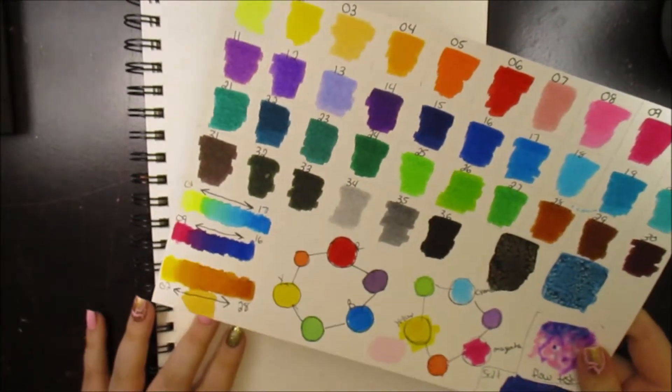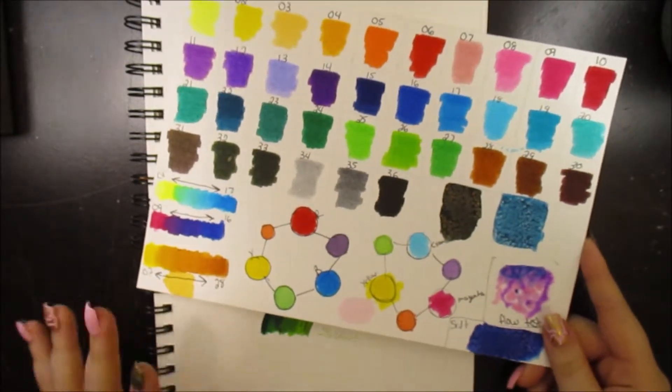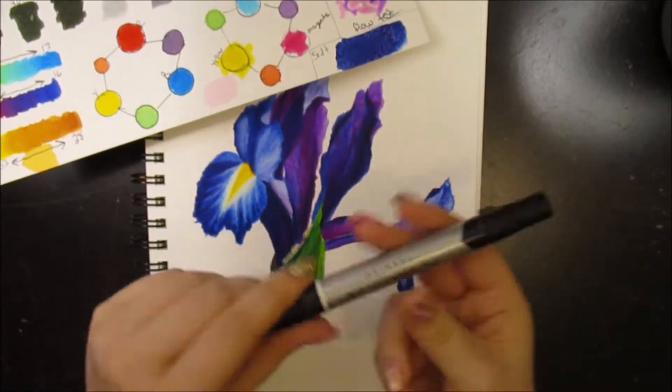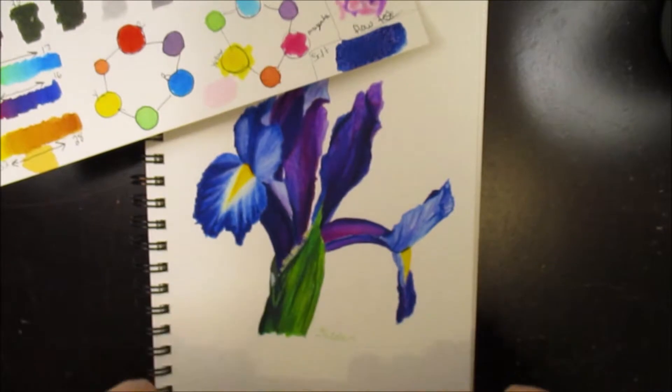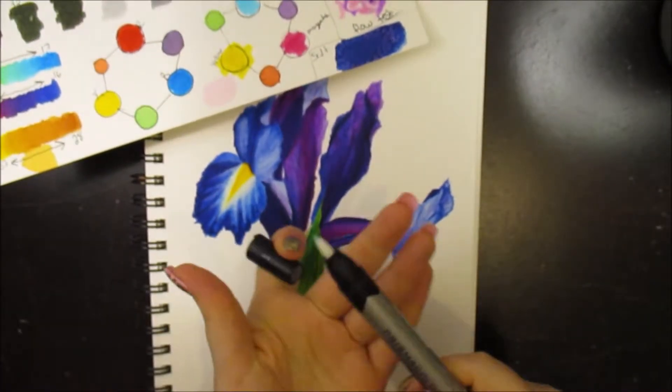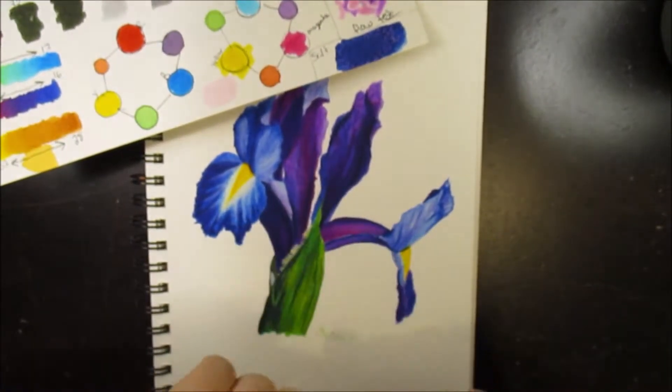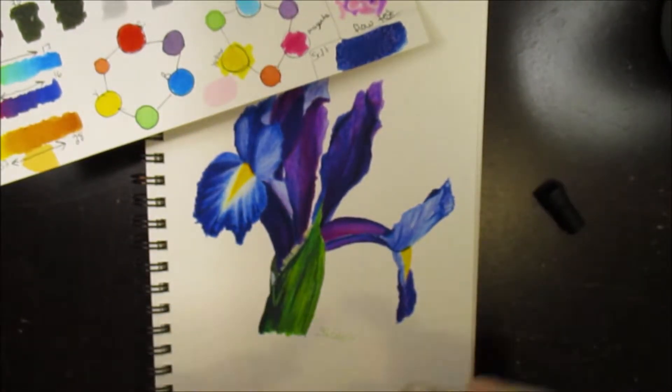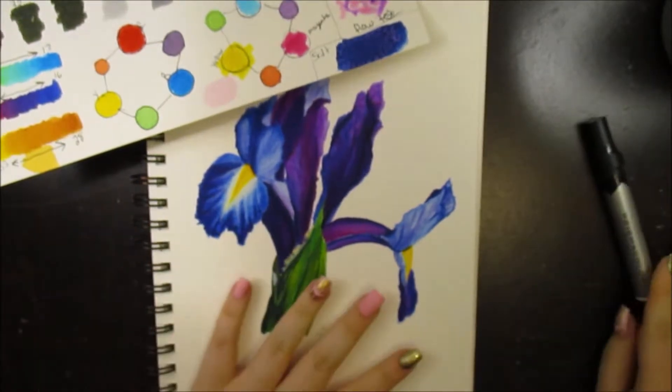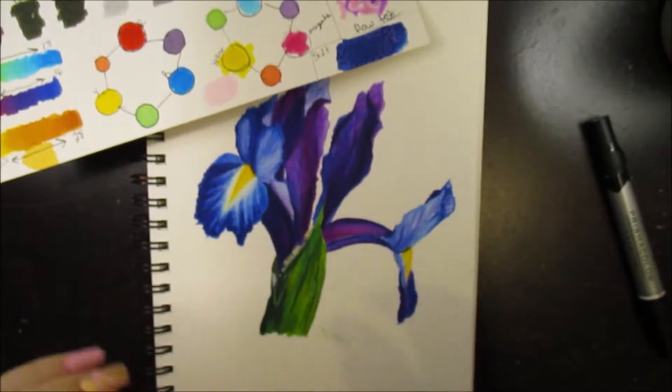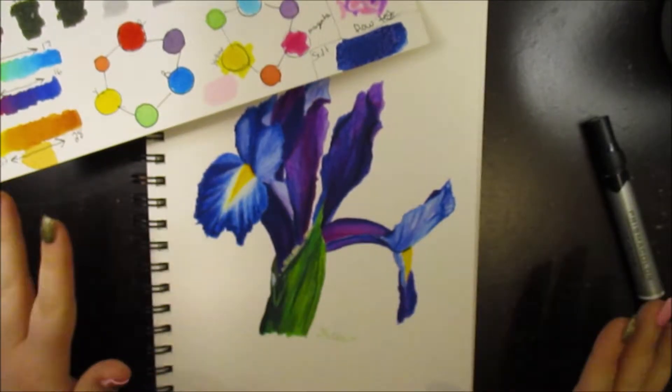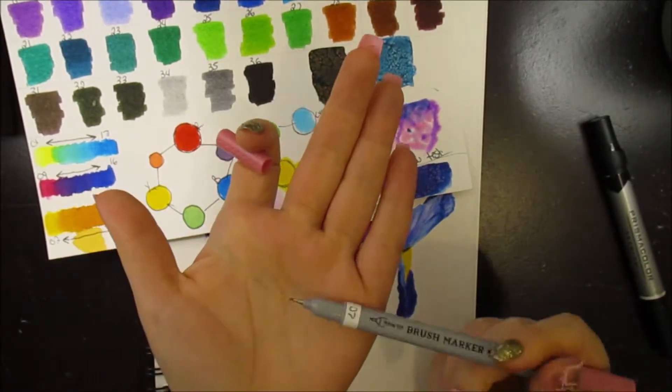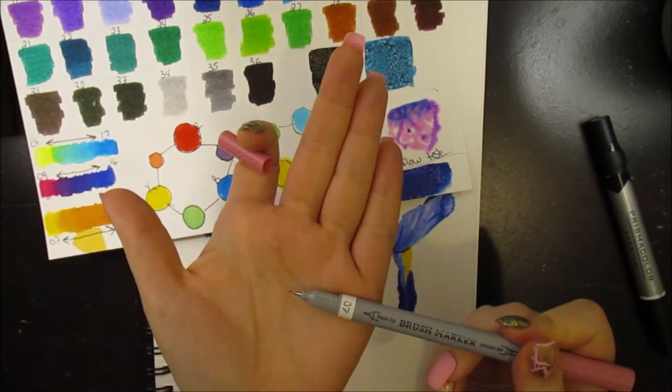They don't have a chisel tip, which is something that most markers, I'm just going to use this Prismacolor for an example, you'll get a brush tip on one end and a chisel tip on the other. Most markers have a chisel tip on the other end, but I don't know anybody that uses them. I don't know anybody that uses those chisel tips. So, I actually really appreciated that they gave us that thin tip because it is really precise and accurate. It gives you a lot of control.